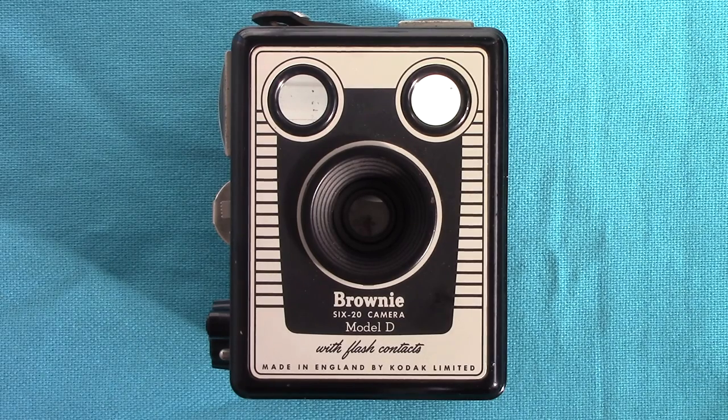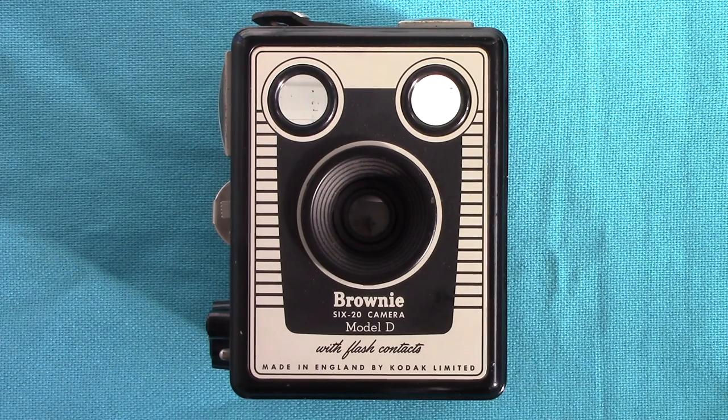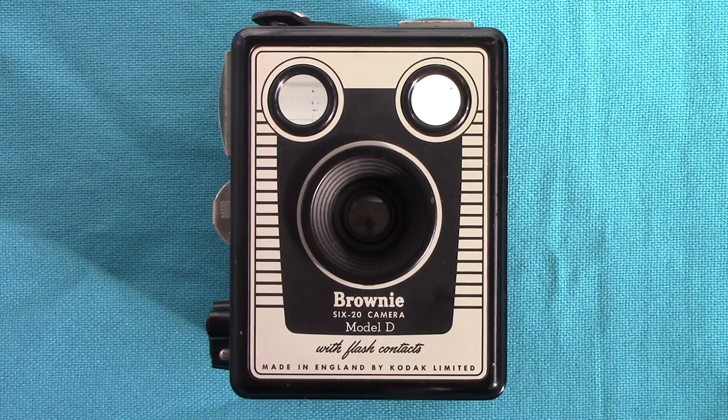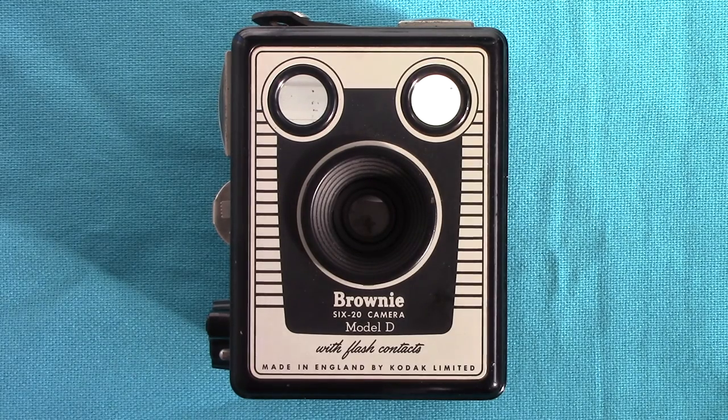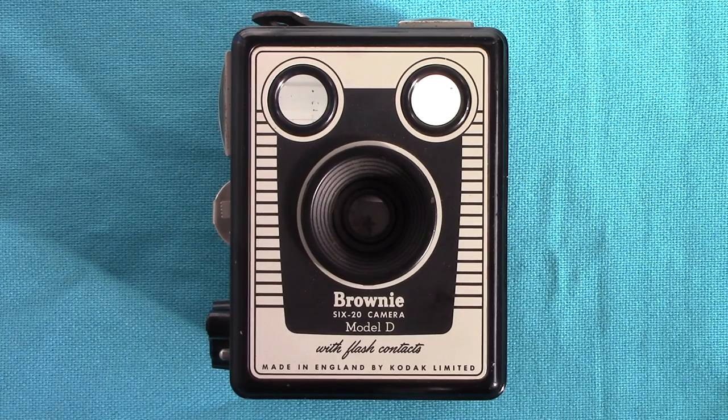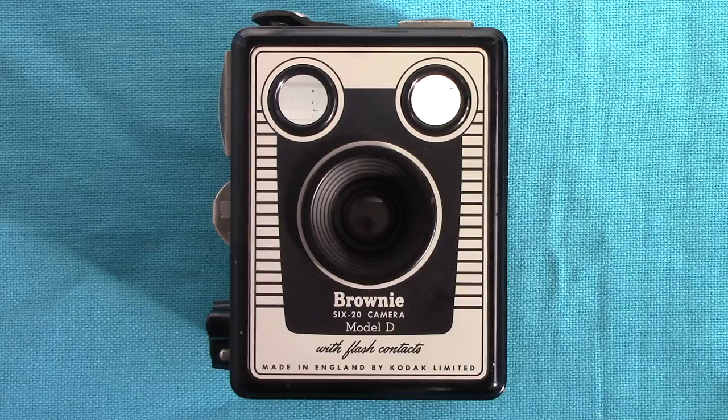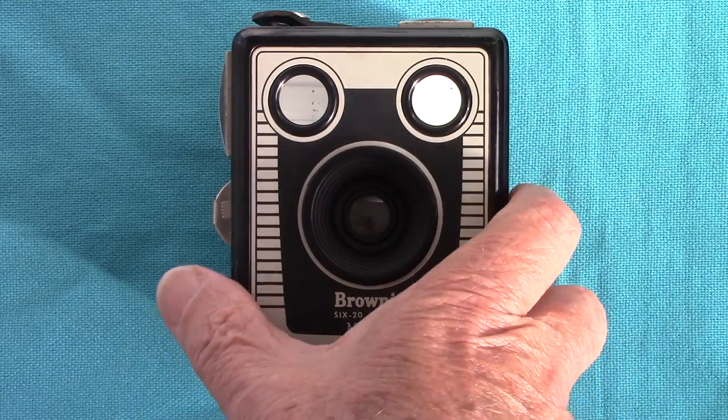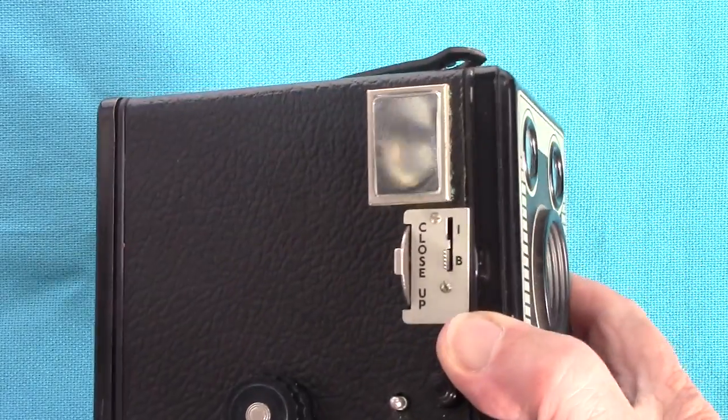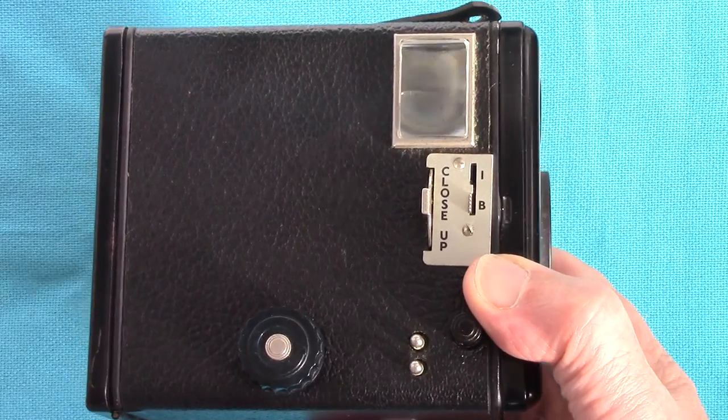Made in England by Kodak Limited, I think the factory was in Wimbledon. I was given this by a gentleman who sent it to me in the post with some other stuff including the Minox I've shown you. The Brownie Model D takes 620 film and captures eight exposures on a roll.